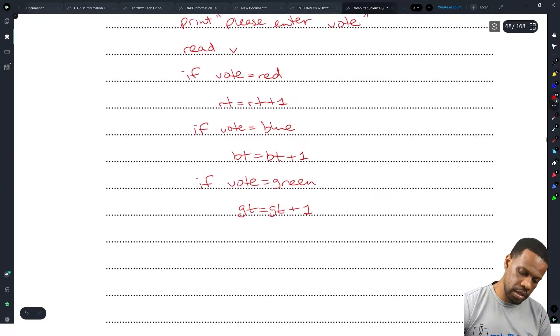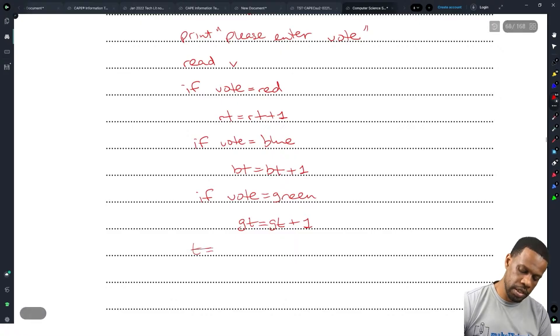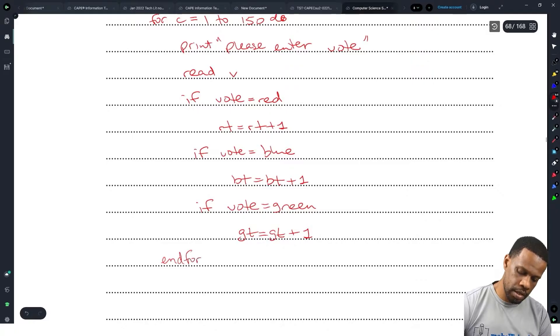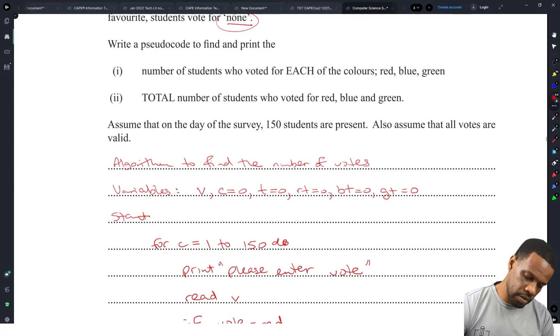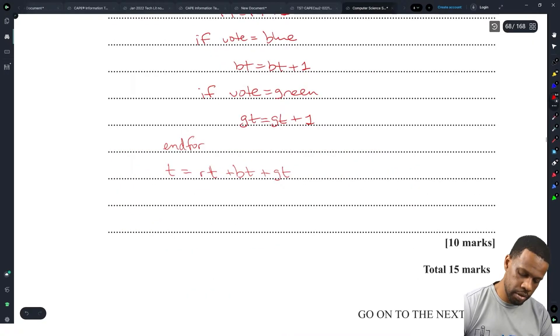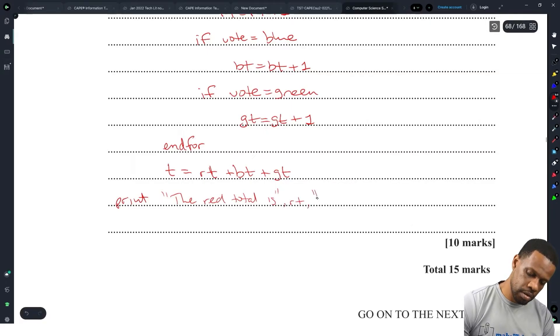When we're done with that now, we just end the for loop. Yeah, we end the for. And then when the for is finished, we say T is RT plus BT plus GT. That's the grand total. Right. So we have to find and print. We have to find and print it. So print the red total is RT, blue is BT, green is GT, and the grand total is T.